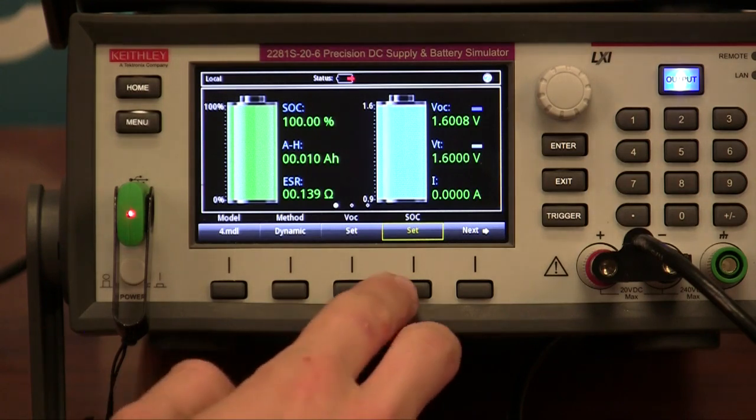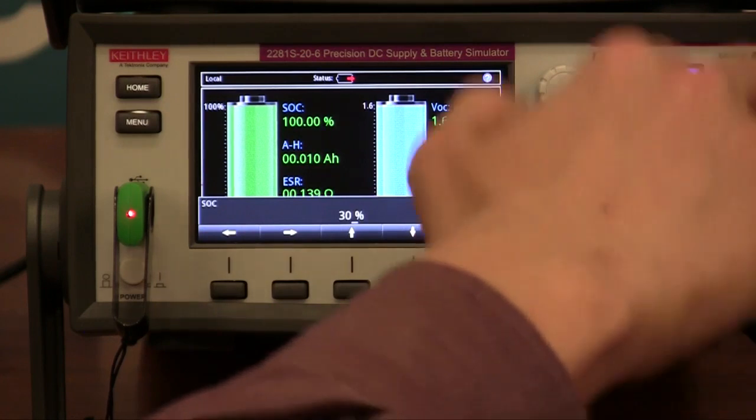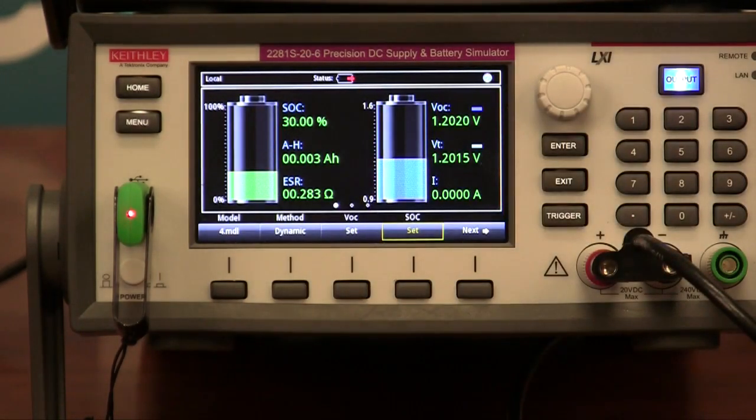For example, I can come in here and set the state of charge of the battery to 30%. And now the 2281 will represent a 30% charged battery.